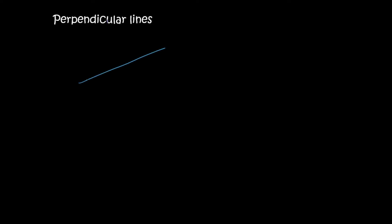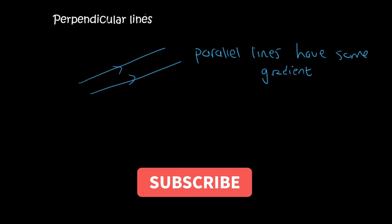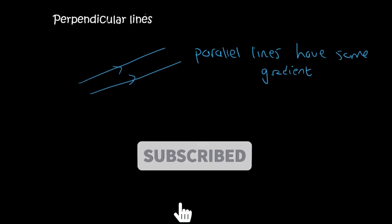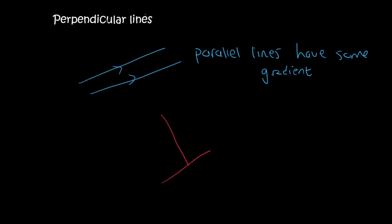In the previous lesson we looked at parallel lines and said that parallel lines have the same gradients. In this lesson we're going to be looking at perpendicular lines. Perpendicular lines look like this — there's line 1 and line 2. They make a 90 degree angle with each other. So how do their gradients compare?